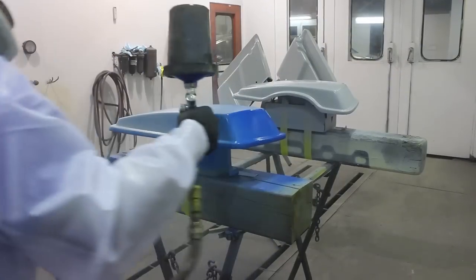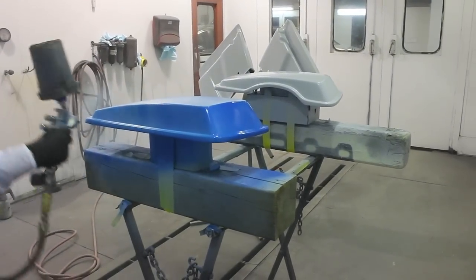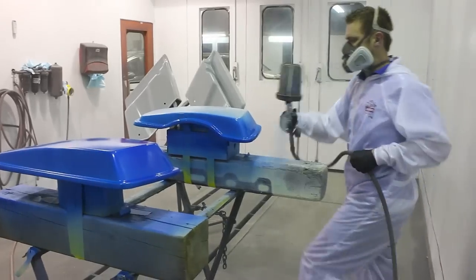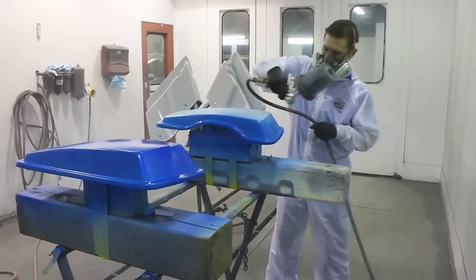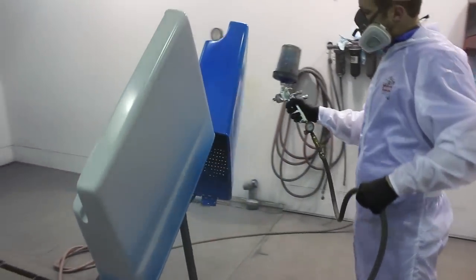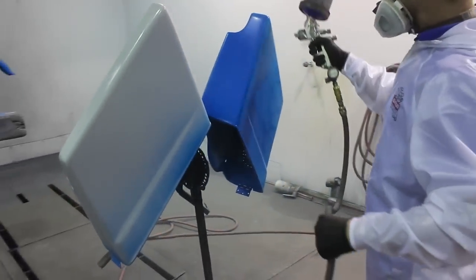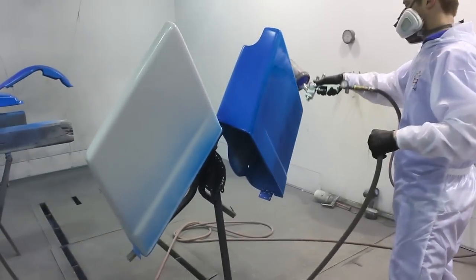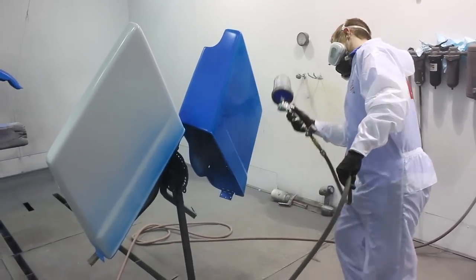So we're rocking with the SATA 5000 HVLP with a 1.5 on this job here, that's one of the latest and greatest guns at the moment. We're working with Onyx solvent base coat so it's going to dry pretty nice and quick and hard. Since we're working with the two-tone, the solvent's a little bit better of a choice because it's a lot easier to tape to. It uses a hardener and it's pretty good to work with for this sort of thing.